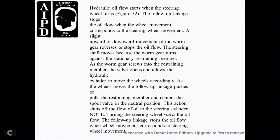Hydraulic oil starts flowing when the steering wheel is turned, as shown in Figure 52. The follow-up linkage controls the oil flow. As the wheels move, the control and steering wheel movement moves slightly upward or downward with the worm gear, reversing the stop of the oil flow. The steering shaft and worm gear turn against the restraining member. The worm gear screws the restraining member, opening the hydraulics to move the wheels. The follow-up linkage pushes the restraining member to turn the spool back to the neutral position, shutting off the oil flow to the steering cylinder. The turning of the steering wheel starts the oil flow, and the follow-up linkage stops the oil flow, with wheel movement corresponding to the steering wheel movement. Figure 52 shows the hydraulic system.